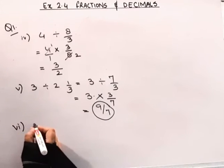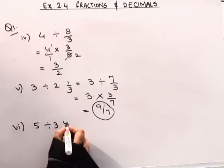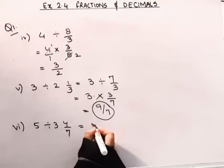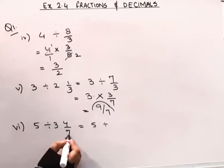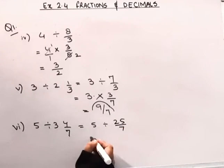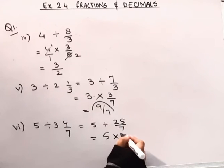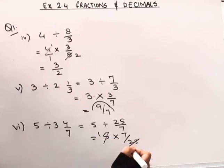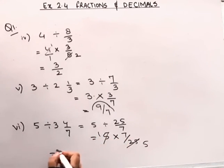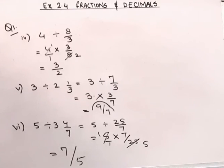Now coming to the 6th part of this question: 5 divided by 3 and 4 by 7. 3 sevens are 21, plus 4 is 25 by 7. Division will change to multiplication — the reciprocal is 7 by 25. 25 and 5 have a common factor of 5. 5 ones are 5, 5 fives are 25. Numerator to numerator, denominator to denominator — 5 ones are 5. So the answer for the 6th part is 7 by 5. Here we complete question number 1. Now coming to question number 2.